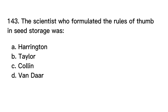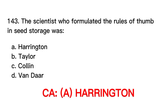Number 143. The scientist who formulated the rules of thumb in seed storage was: A. Harrington. B. Taylor. C. Collin. D. Vendere. Correct answer is letter A. Harrington.